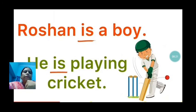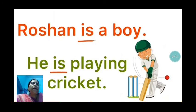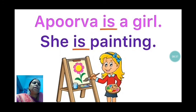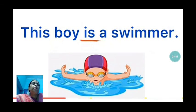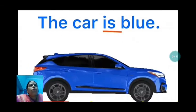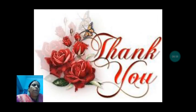See: 'Rohan is a boy' — here 'is' is used as a main verb. 'He is playing cricket' — here 'is' is used as the auxiliary verb. 'Purva is a girl' — 'is' is used as a main verb. 'She is painting' — 'is' is used as the auxiliary verb, helping the main verb 'painting.' 'This boy is a swimmer' — 'is' is the main verb. 'The car is blue' — 'is' is used as a main verb. Thank you everyone, have a good day, bye.